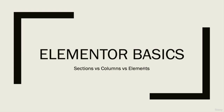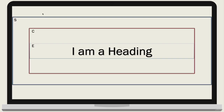Elementor revolves around these three things. So let's go ahead and take a look at it. Let's take the basic structure of Elementor Page Builder. Here is basically the basic boilerplate of Elementor. You can see that I have made some squares. This blue square will be considered as a section - S represents that. The maroon square will be considered as a column. And this blue line which is very thin will represent the element. So first we have this section, inside this section we have a column, and inside this column we have an element.